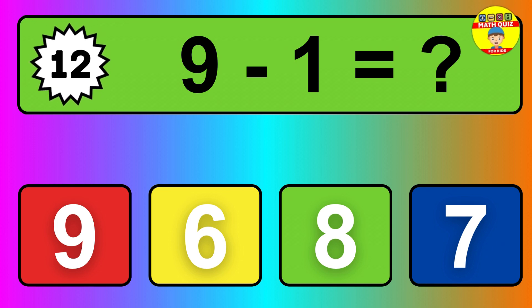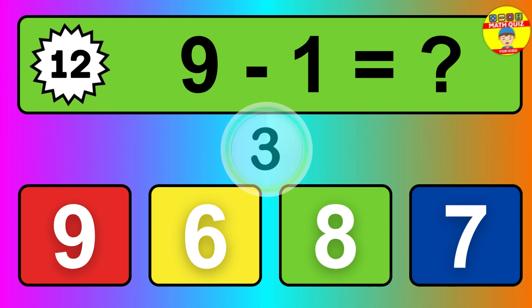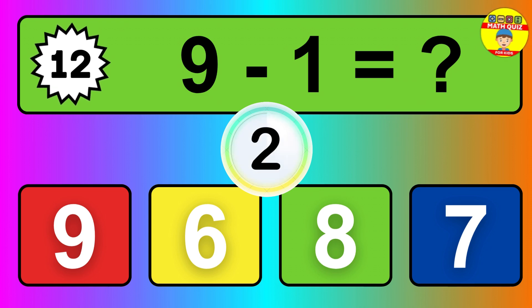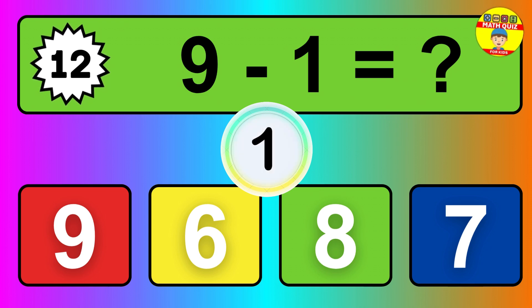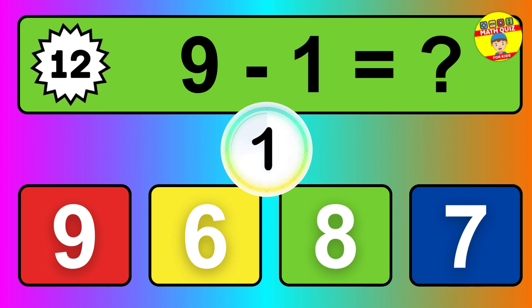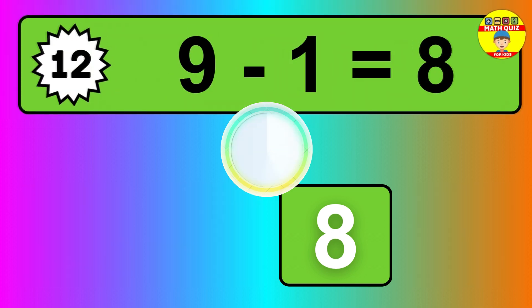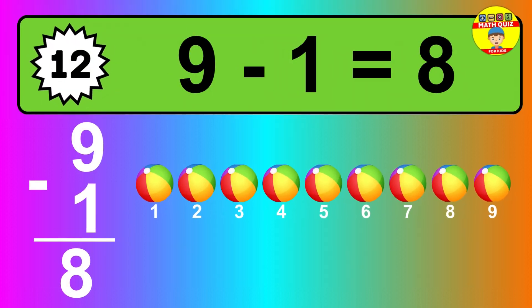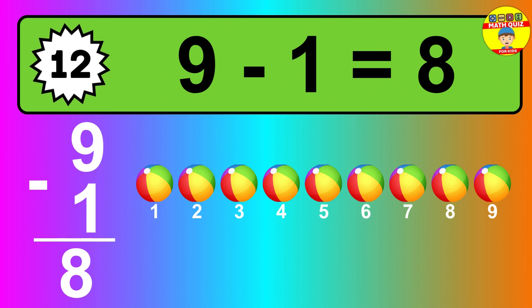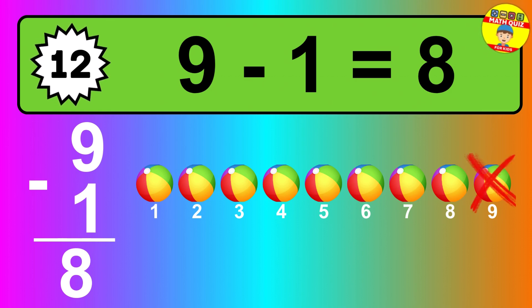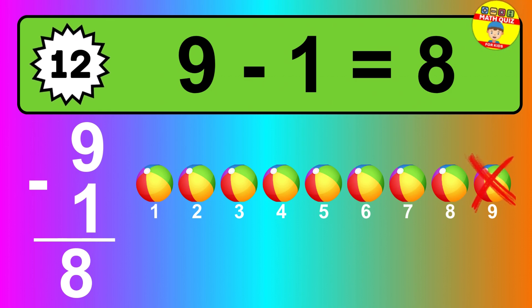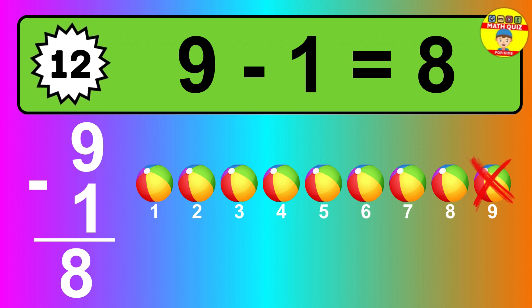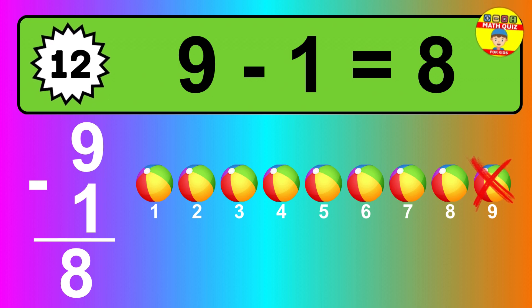Question 12. 9 minus 1 equals what? So the answer is 9 minus 1 is 8. Let's count it. 1, 2, 3, 4, 5, 6, 7, 8.